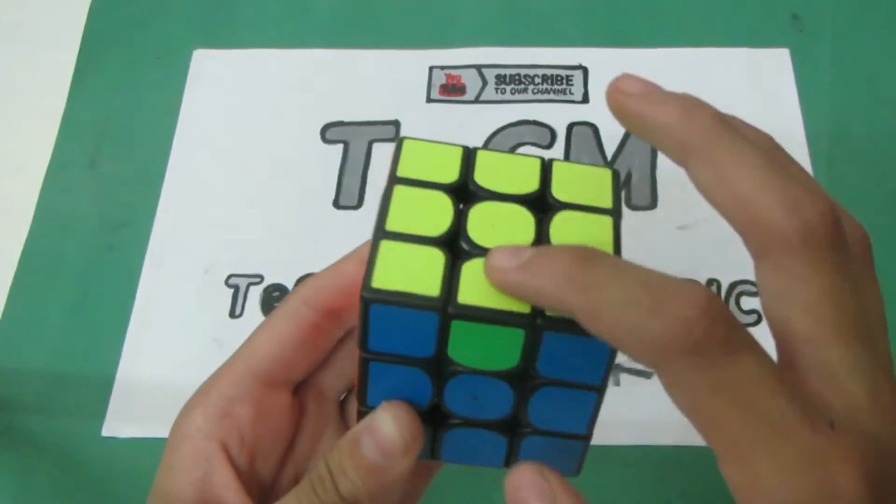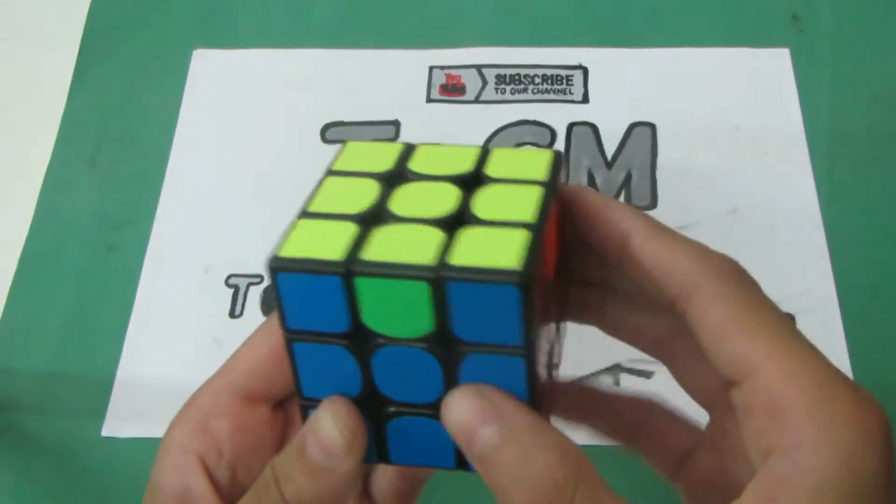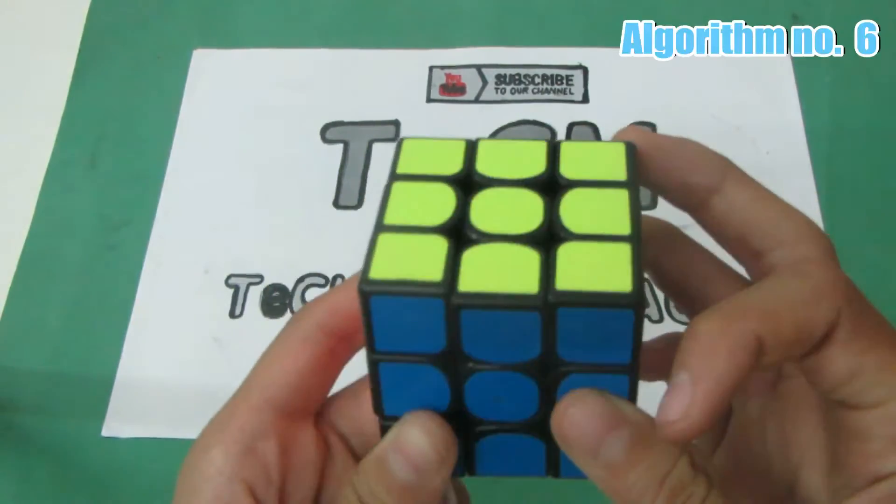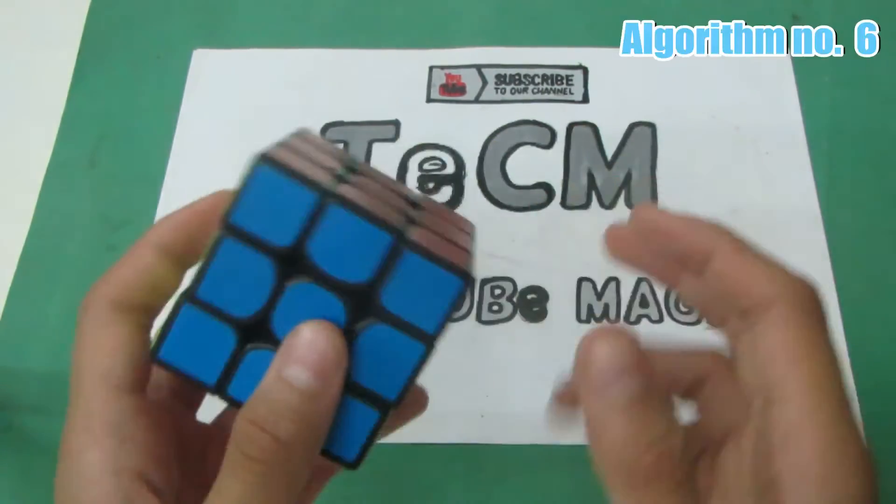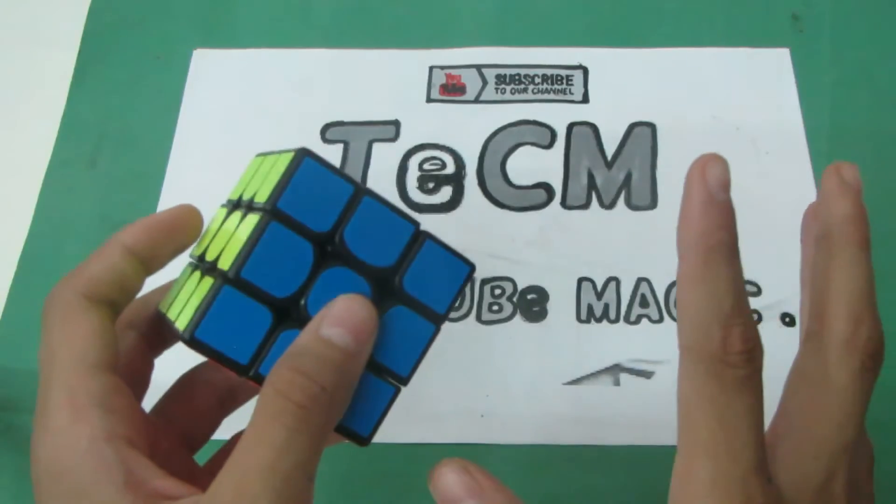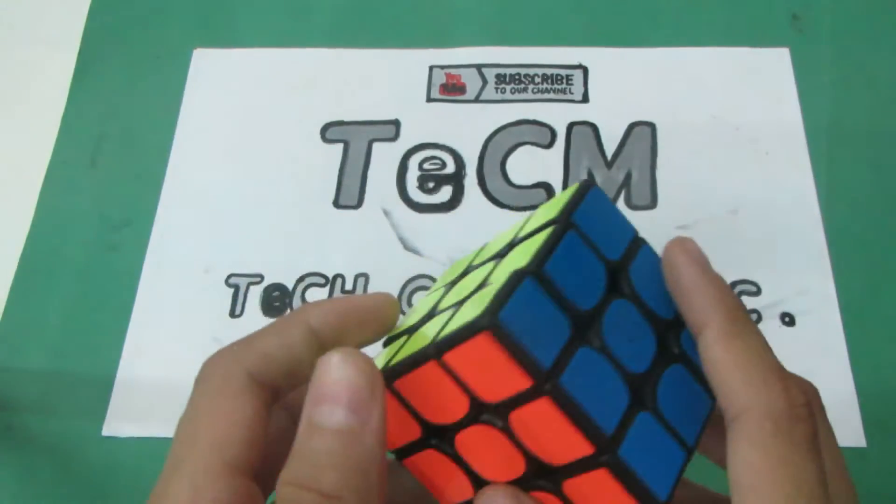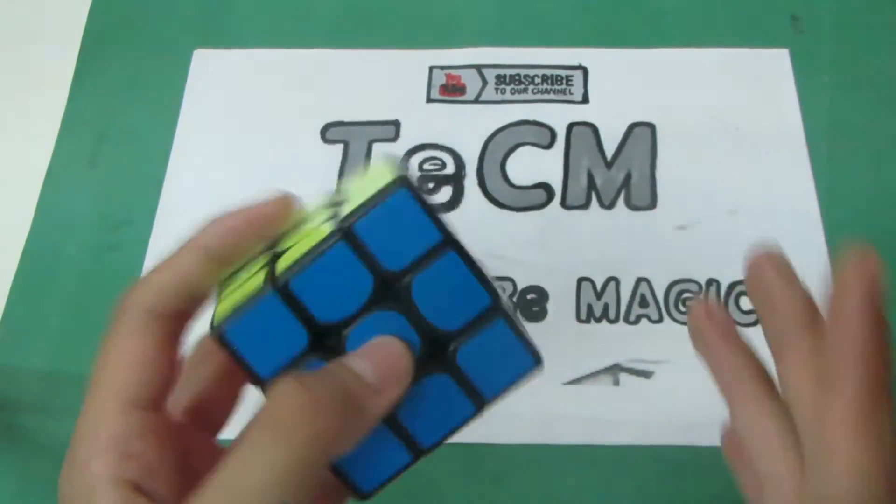That is the swap of the edges like this. And I'm doing the algorithm. And it's the cube solved. So these are only two algorithms you need to use out of those six. And let's revise it once again.